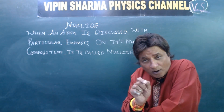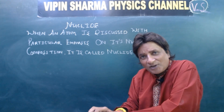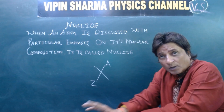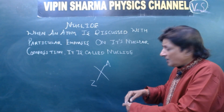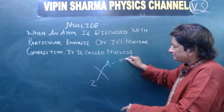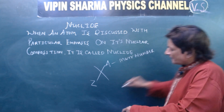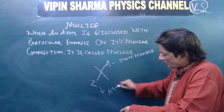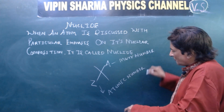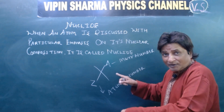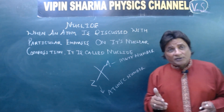The representation of an atomic nucleus takes place as X with A on top and Z on the bottom — written as X(Z, A). Here, A is called the mass number and Z is called the atomic number. Sometimes we confuse the letter A with atomic number, but that is not correct.